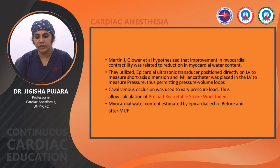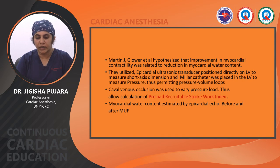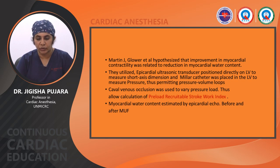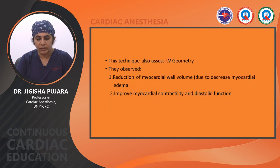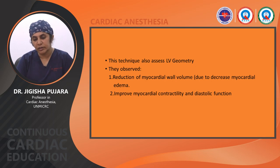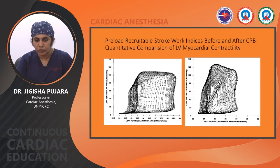Martin J. Glower et al. hypothesized that improvement in myocardial contractility was related to reduction in myocardial water content. They utilized an epicardial ultrasonic transducer on the LV to measure short-axis dimension and a Miller catheter placed into the LV to measure pressure, permitting pressure-volume loops. Caval venous occlusion was used to vary pressure loads, allowing calculation of preload recruitable stroke work index. Myocardial water content was estimated by epicardial echo before and after MUF. They observed reduction of myocardial wall volume due to decreased myocardial edema and improvement in myocardial contractility and diastolic function.